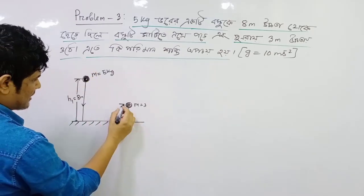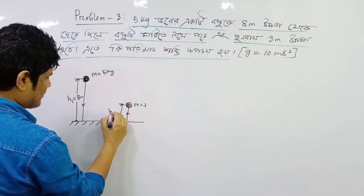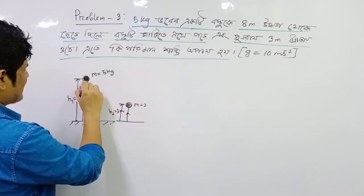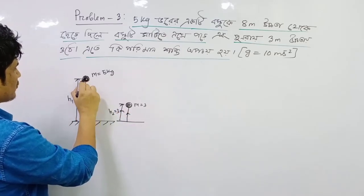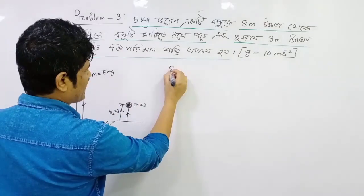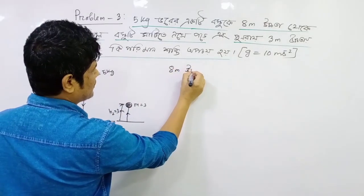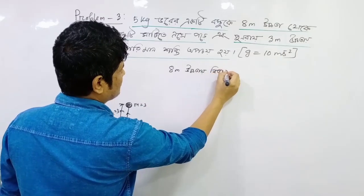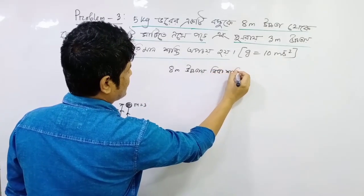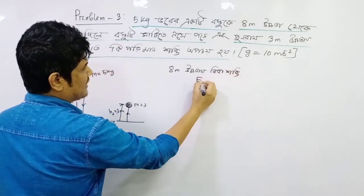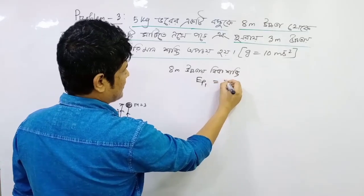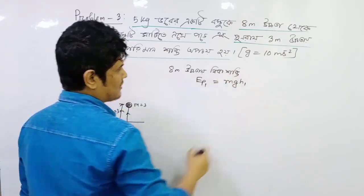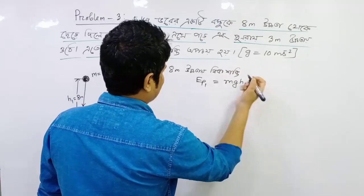A is higher than 3 meters. At 8 meters, this value is higher. So how can we say? At 8 meters, it was higher: EP1 equals mgh1. I can't make this value without the numbers given.